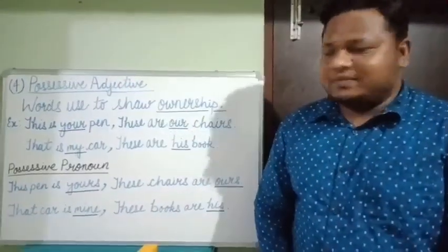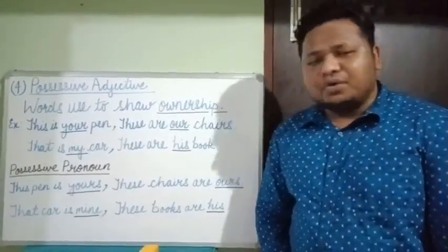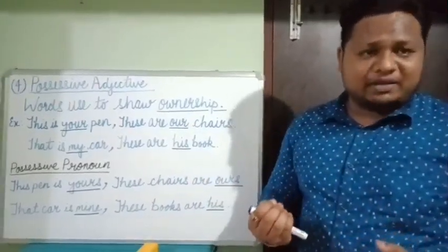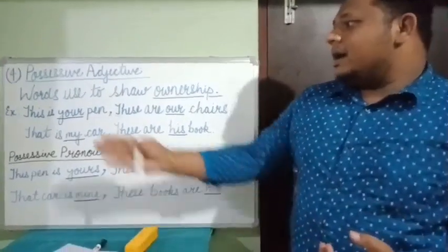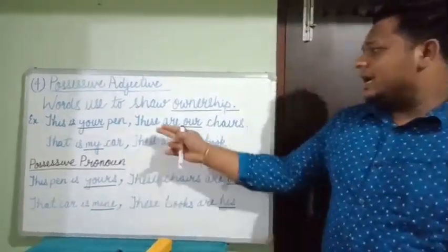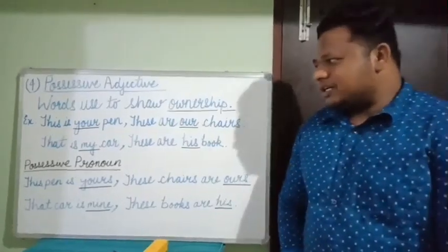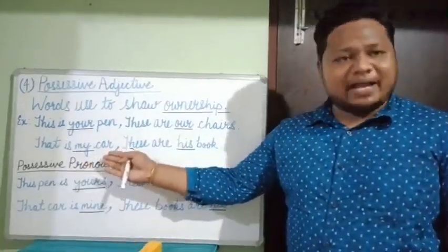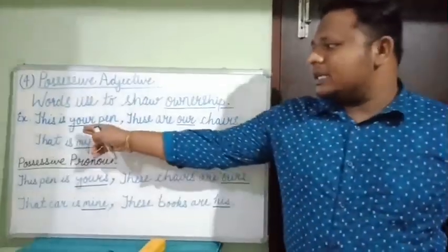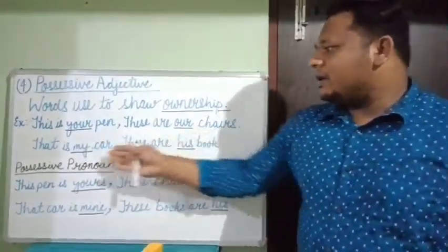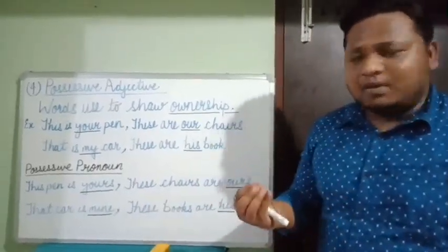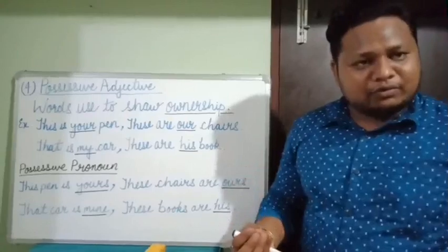Possessive adjective. Words used to show ownership — that is, who owns a particular thing. For example: This is your pen. These are our chairs. That is my car. These are his books. Here the words 'your', 'our', 'my', and 'his' are showing the ownership of a particular noun.